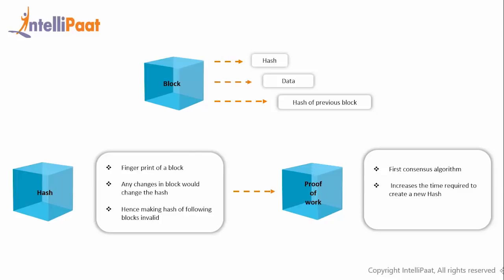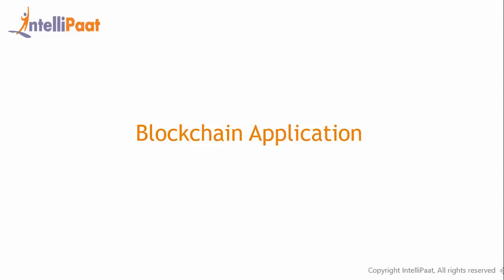This makes blockchain data almost impossible to alter. This is nothing but the first consensus algorithm. Proof of work increases the time required to create a new hash, making the technology secured. Before anyone can change the hash of the entire network, nodes are notified of the tampering attempt, and hence tampering becomes a tough task to perform—almost impossible.